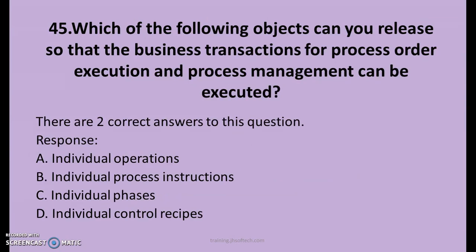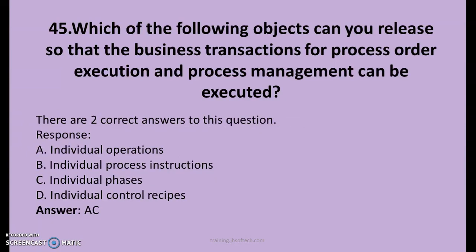45th question. Which of the following objects can you release so that business transactions for process orders, execution, and processing management can be executed? There are two right answers. A. Individual operations, B. Individual process instructions, C. Individual phases, D. Individual control recipes. The right answers are A and C: individual operations and individual phases.